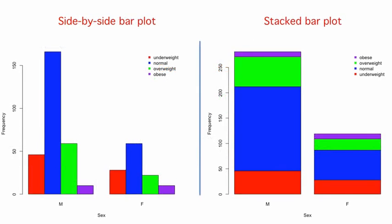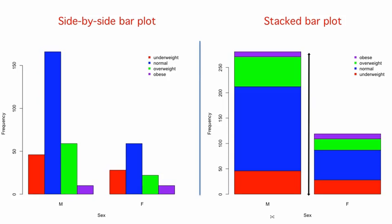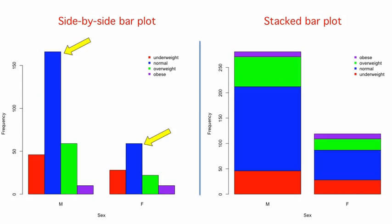For a graphical display of the joint distribution, we can plot the frequencies in either side-by-side or stacked bar plots, where the height of each bar is the number of skeletons in each BMI classification for each sex. From the side-by-side plot, there are many more male skeletons in the normal BMI range than any other category. However, from the stacked bar plot, it is clear there are more than twice as many males as females, making it difficult to fairly compare the proportions of each BMI category between sexes.